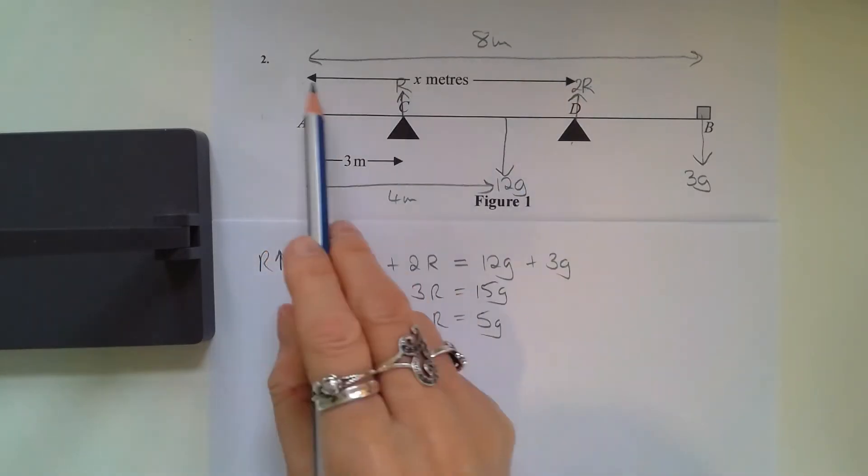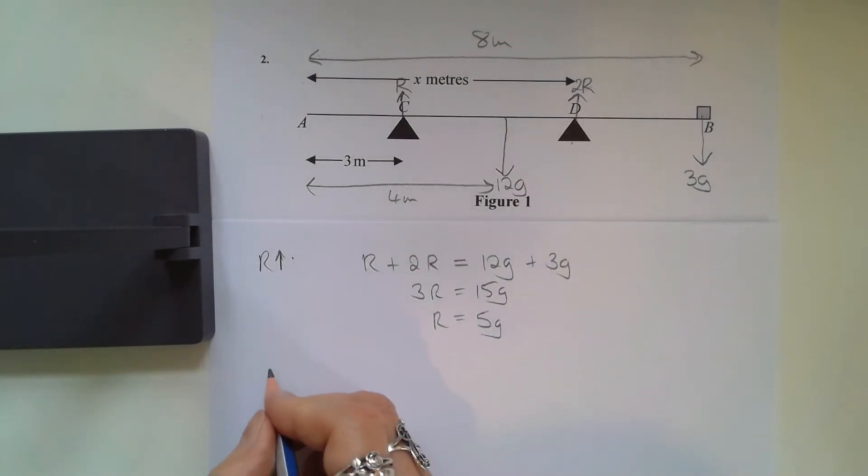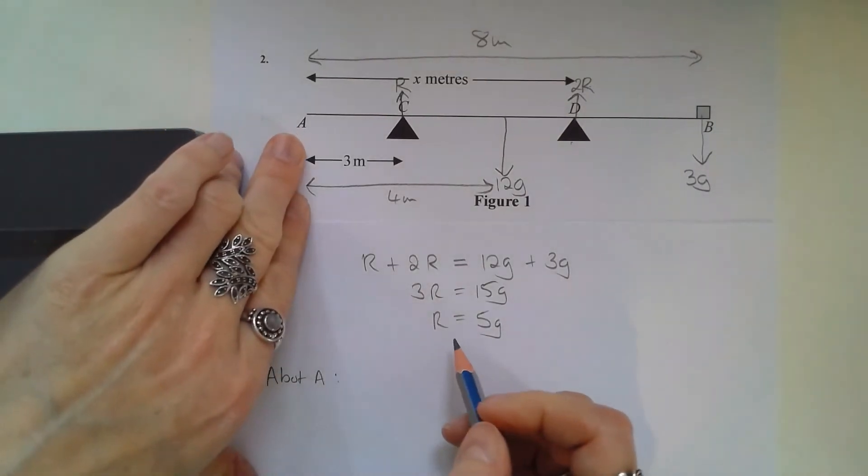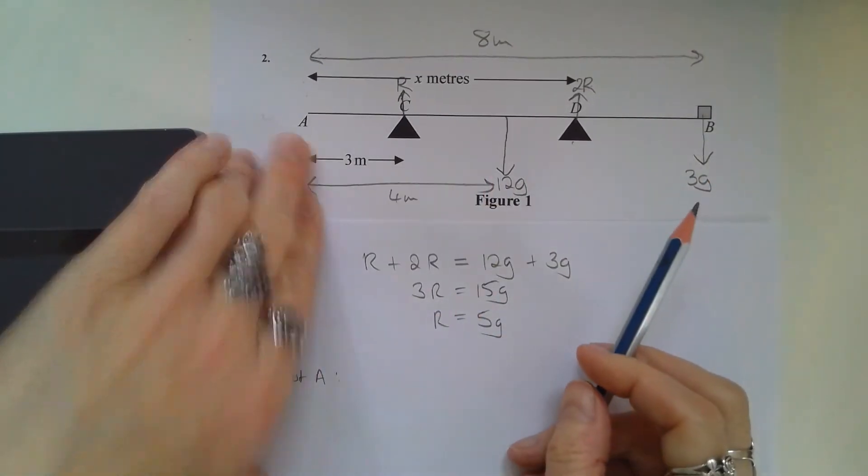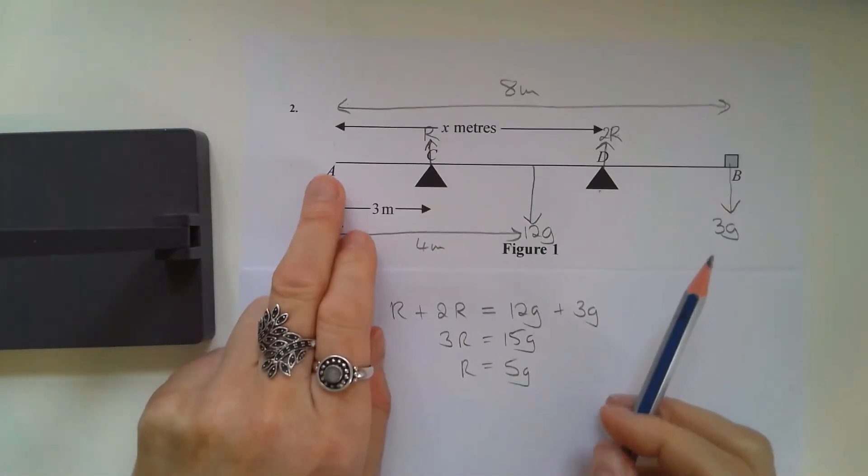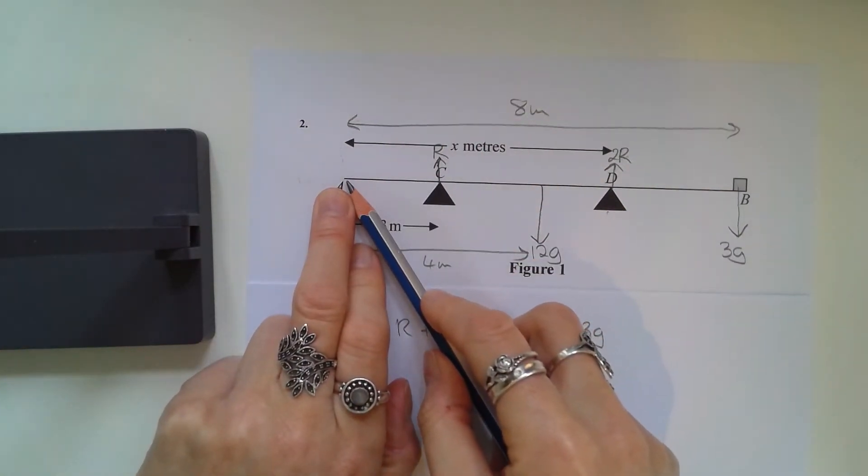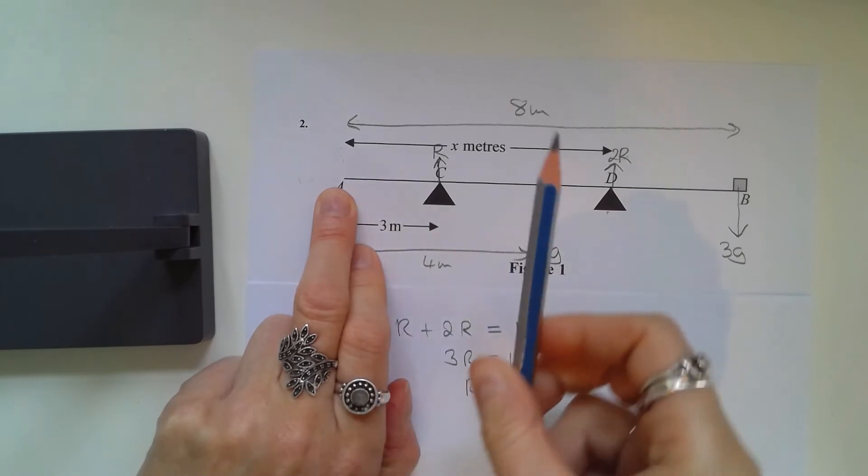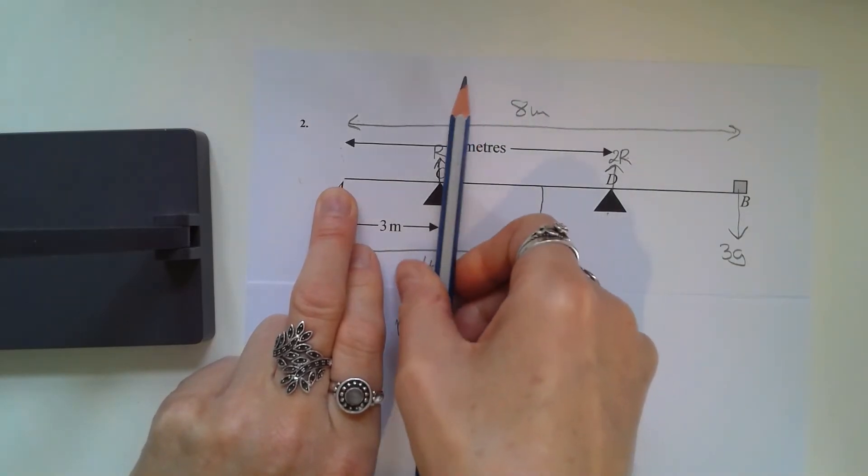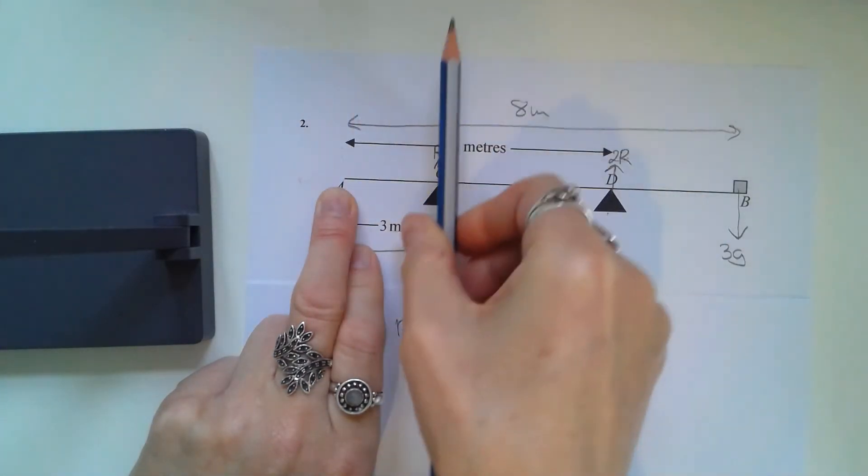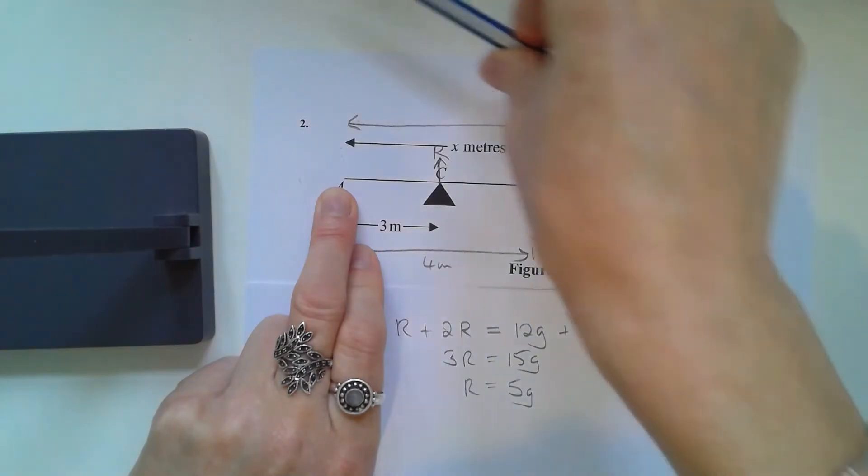So about A. Moments go either clockwise or anti-clockwise. If you're unsure, it's worth just putting your finger on where you're taking the moments about as if that was a central point in a circle. Then R goes about that point in an anti-clockwise direction, and 2R also goes anti-clockwise.